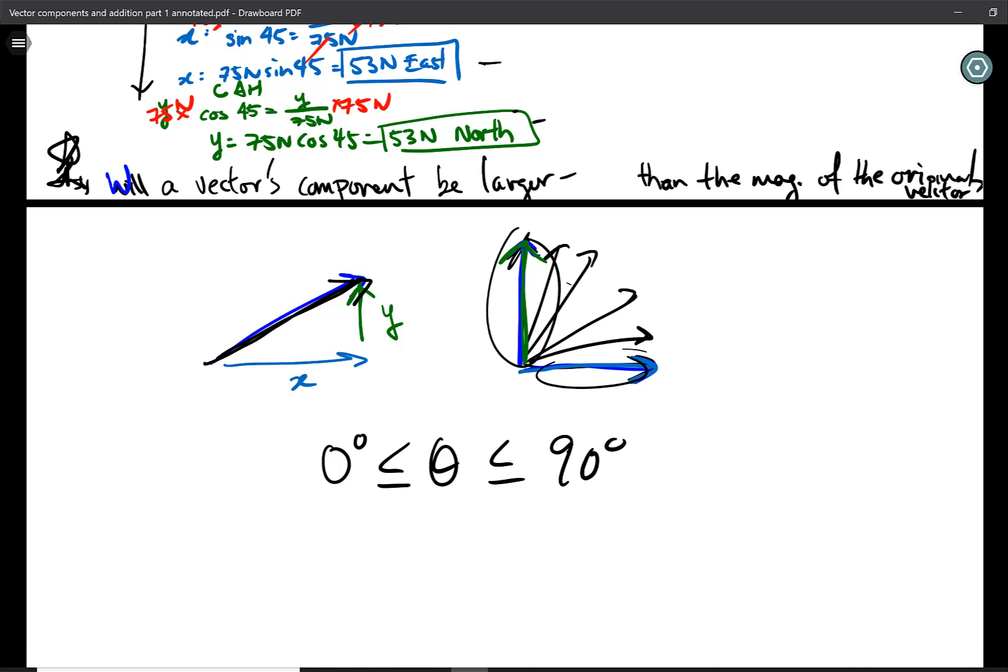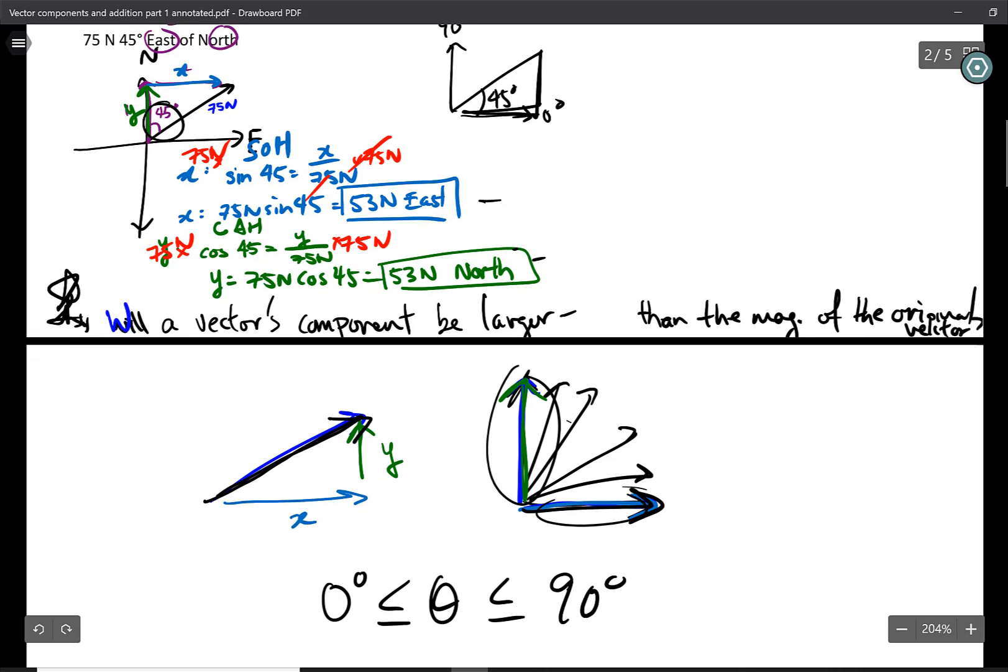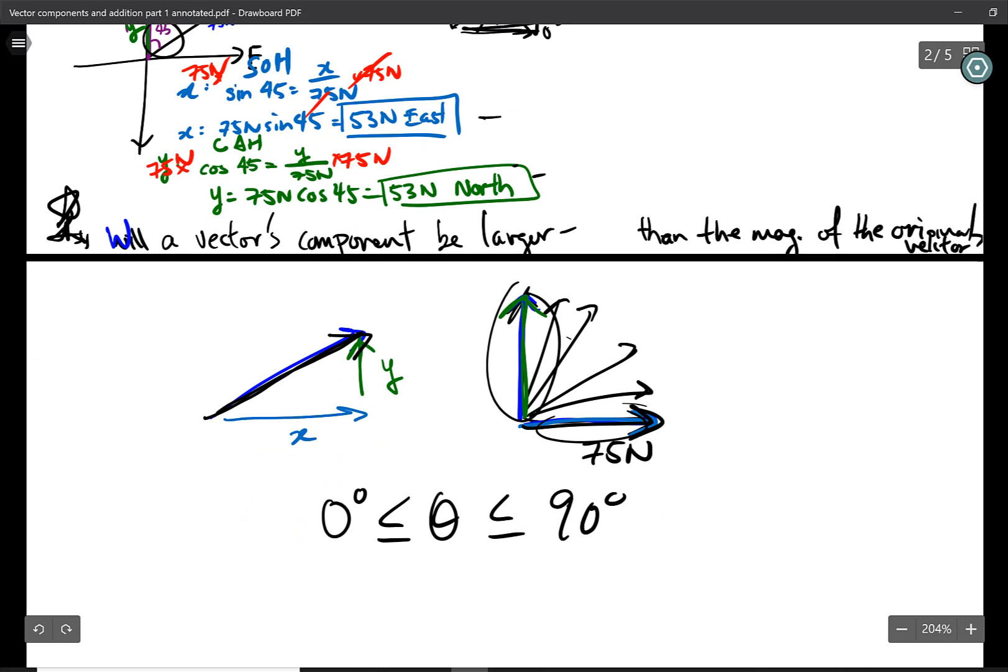And in those cases, you're not going to have a y or an x component, which means your whole vector's magnitude will be in that direction. So if we took our previous case, 75 newtons, and it was just east, then the component east will be just 75 newtons. So in that case, a vector's component is equal to the magnitude of the original vector.